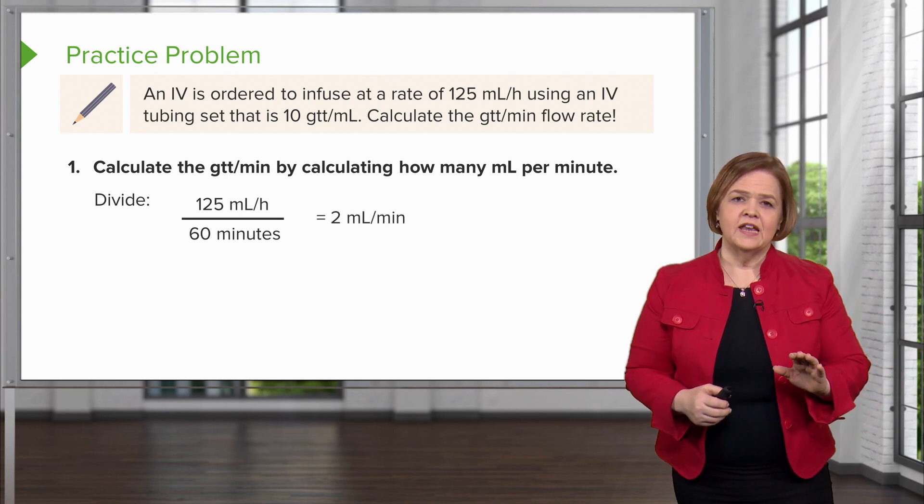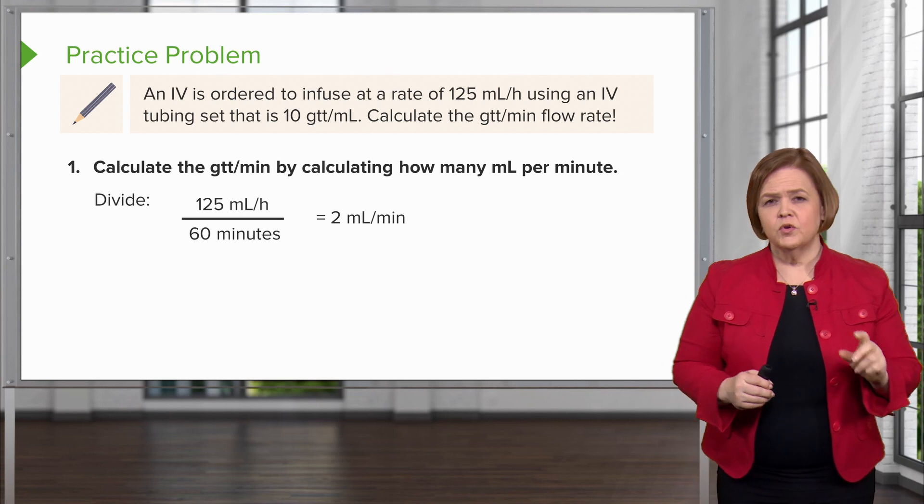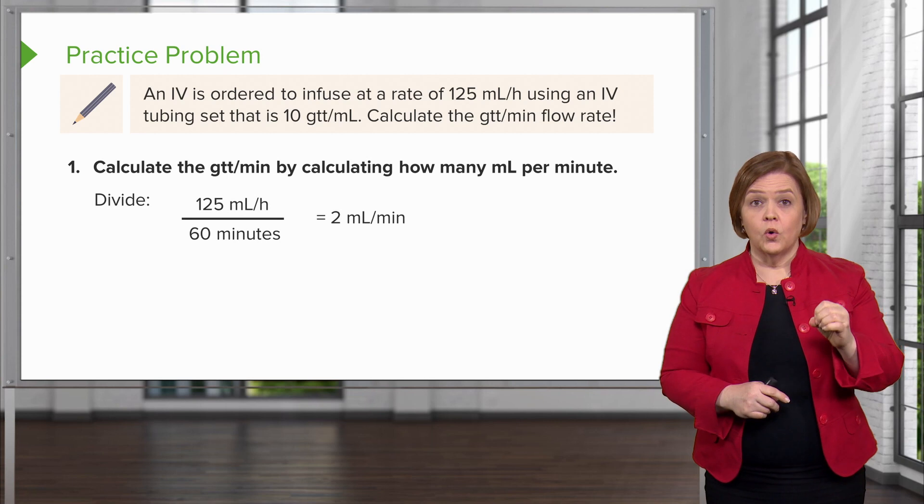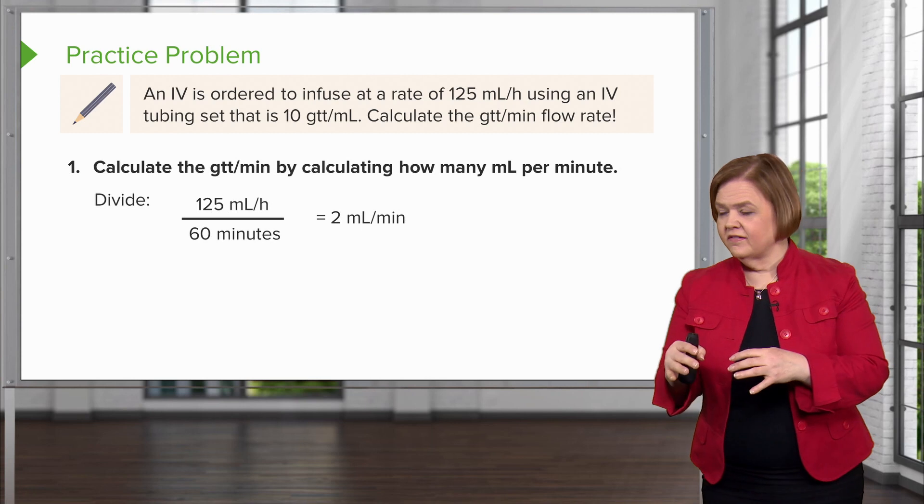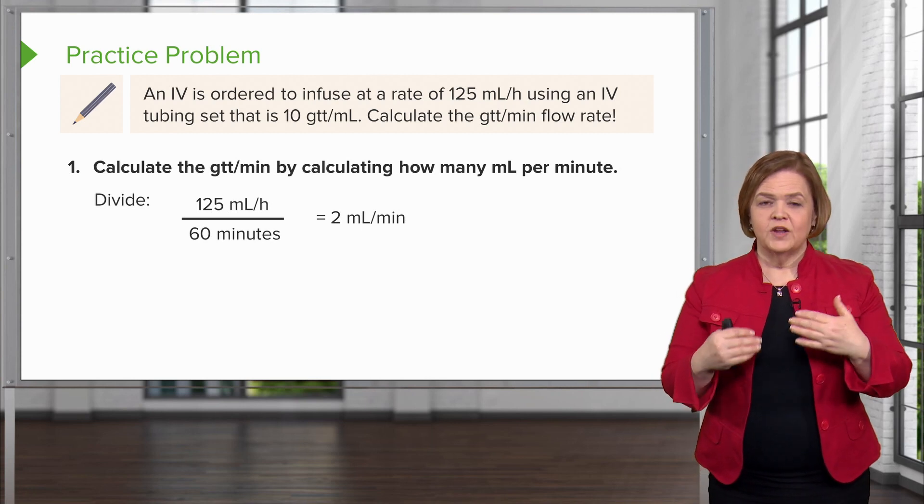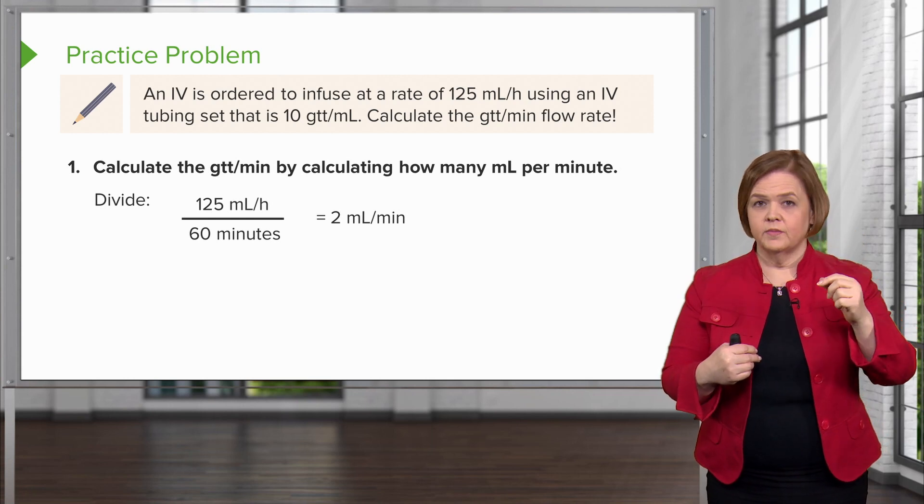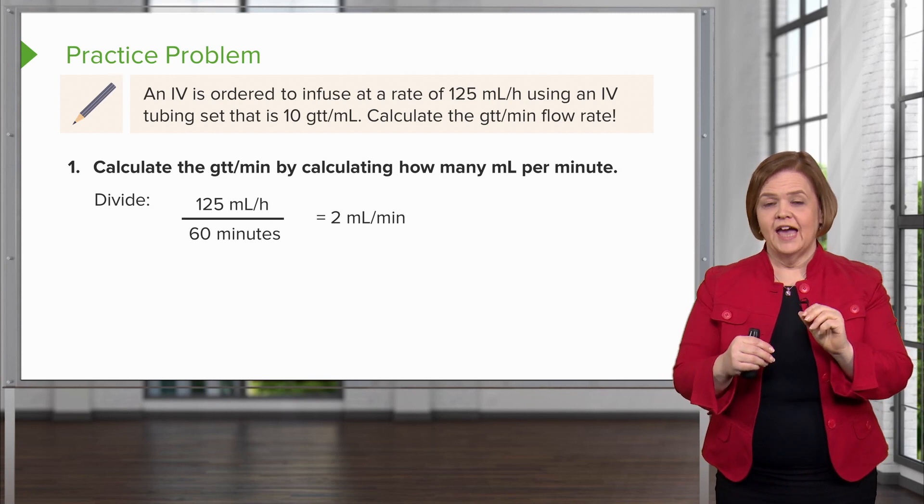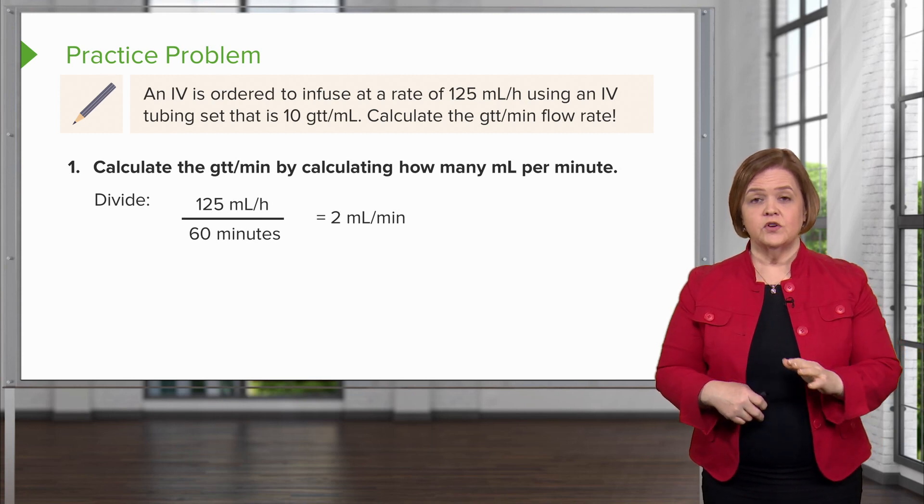Wait a minute - I know that 125 divided by 60 isn't a perfect 2. But remember, we're doing this manually. We're counting drops, and I can only count whole drops. When I'm counting using only my eyes, I can only count whole numbers of drops. I can't count two and a half drops or 2.26 drops - only two or three. Since I've divided 125 by 60, I'm going to go with 2 milliliters per minute.